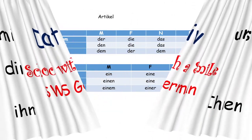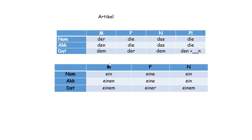As we already know the articles in accusative, now we see the dative. Masculine dative becomes 'dem', feminine and neuter also 'dem', and plural 'den' plus n.